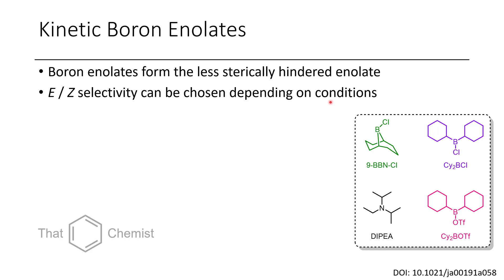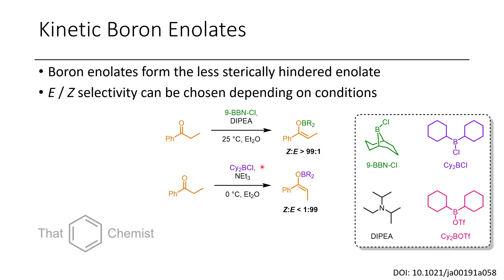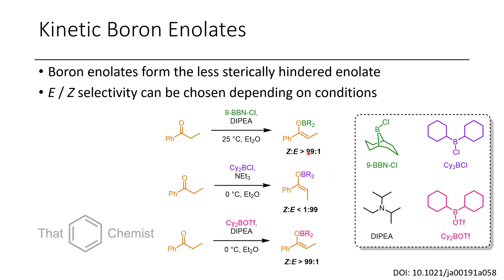You might wonder how we choose whether we get an E or Z-enolate using boron-containing reagents. If you choose your conditions, you can get really good selectivity. With propiophenone treated with 9-BBN chloride and diisopropylethylamine as a base, we get essentially only the Z-alkene with greater than 99 to 1 selectivity. However, using a different boron-containing chloride with triethylamine, we get greater than 99 to 1 selectivity for the E-alkene. If we replace the chloride with a triflate and change to diisopropylethylamine, we can re-invert the selectivity back to greater than 99 to 1 for the Z-alkene.